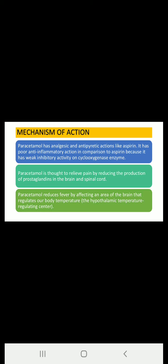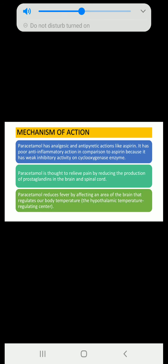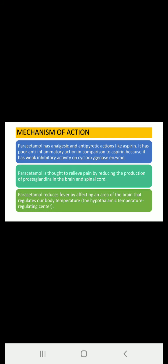Aspirin has very high inhibitory activity on the cyclooxygenase enzyme, which is responsible for producing pain. As compared to aspirin, paracetamol has weak inhibitory activity, so its action is also less than that of aspirin. Paracetamol is thought to relieve pain by reducing the production of prostaglandins in the brain and spinal cord.